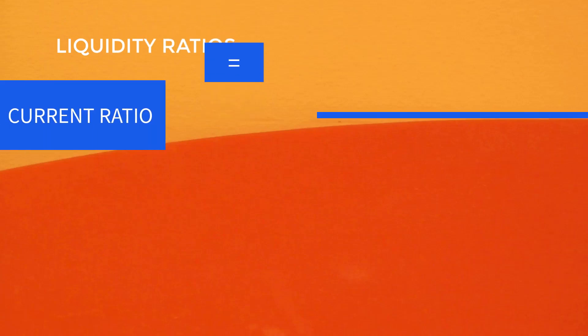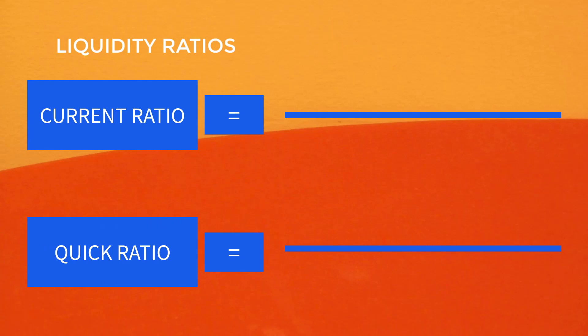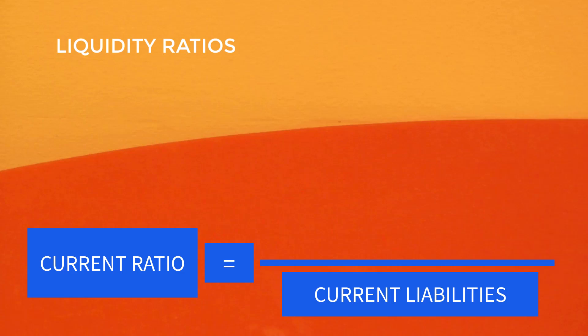First, the liquidity ratios — particularly current ratio and quick ratio. The two of them have a similar denominator: current liabilities. So what's the difference? It's the numerator.